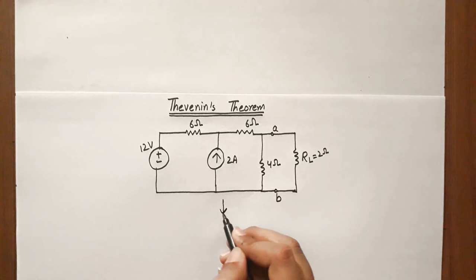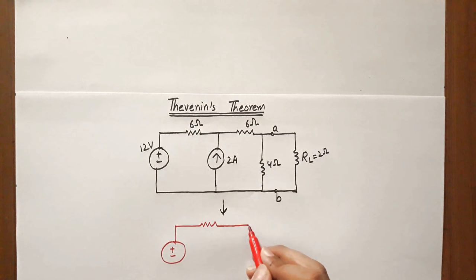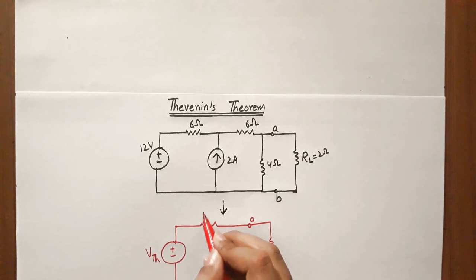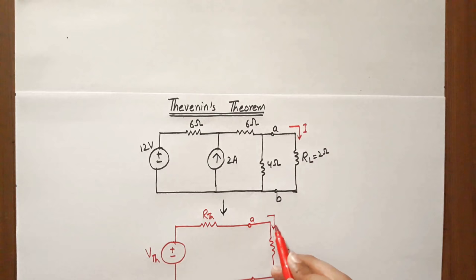We replace this whole circuit by two parameters only: a voltage source and a resistance. We will call these V_thevenin and R_thevenin, and R_L is the load. When we have the Thevenin equivalent circuit, finding the current through the load resistance will be very simplified.